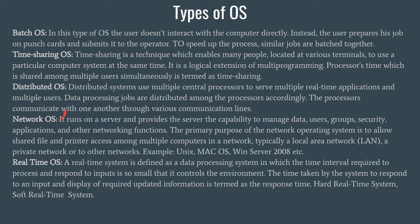In Network OS, this kind of OS runs on a server and provides the server the capability to manage data, users, groups, security, applications, and other networking functions. The primary purpose is to allow shared file and printer access among multiple computers in a network, typically a local area network or LAN. If there is some file on one particular computer, it can be transferred directly to all computers connected in the network. Examples include Unix, Mac OS, and Windows Server 2008.